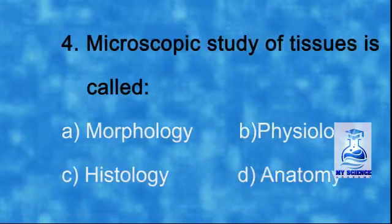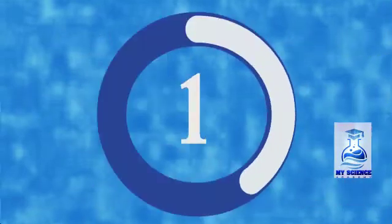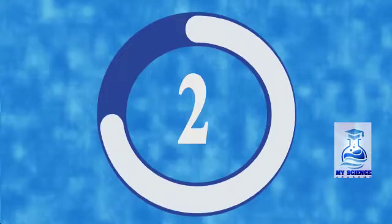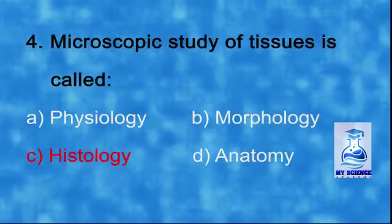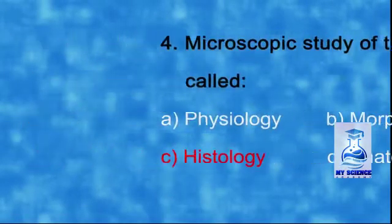Number four: the microscopic study of tissues is called — a) morphology, b) physiology, c) histology, d) anatomy. The correct option is c) histology.